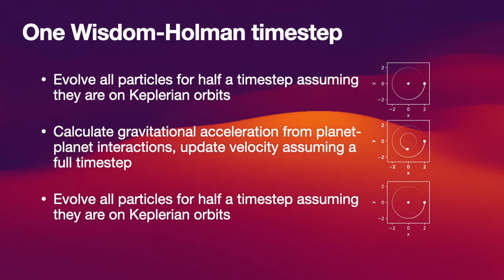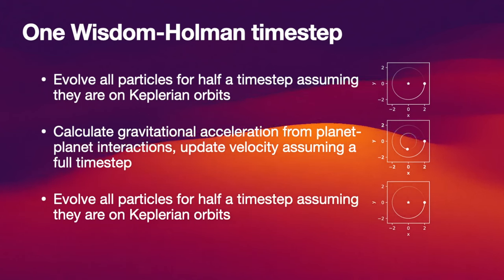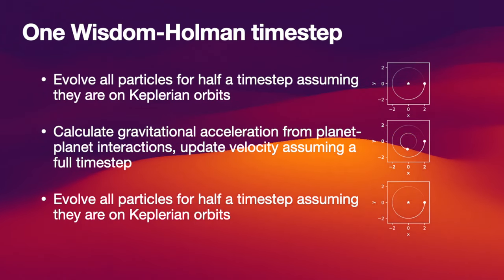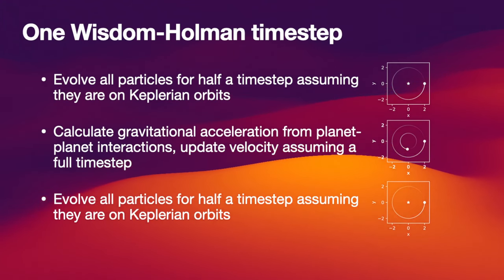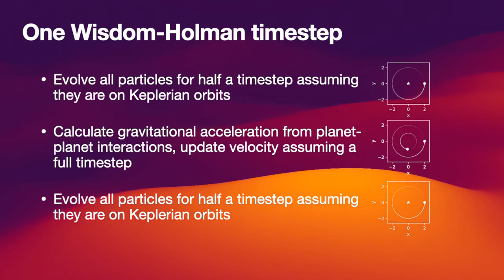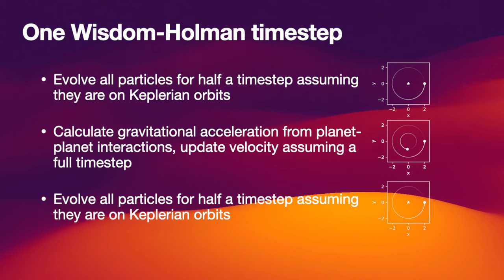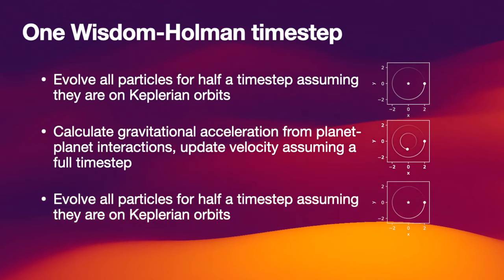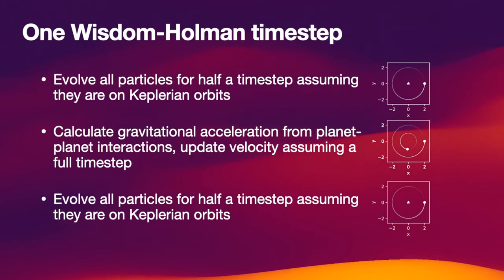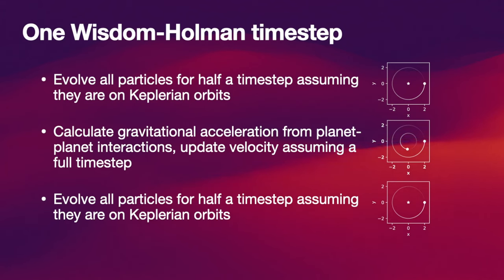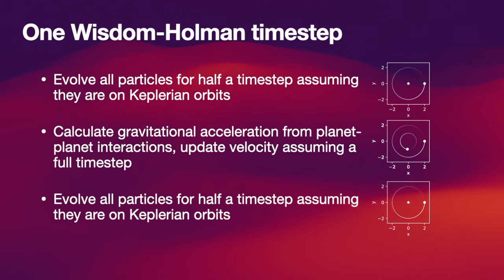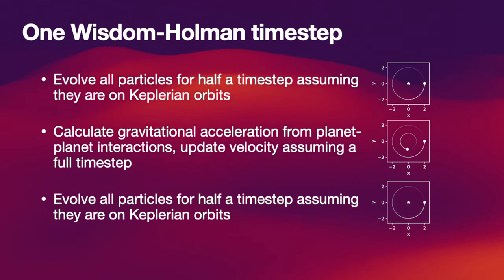To construct one complete Wisdom-Holman time step, it involves three steps. First, we evolve all particles for half a time step, assuming that they are on Keplerian orbits, therefore ignoring all the other planets. We then calculate the gravitational accelerations from planet-planet interactions, and we assume that for a full time step those are applied to the velocities, and therefore the velocities will change. At the end, we finish off with yet another half time step, evolving all particles on Keplerian orbits. This is very reminiscent of a drift-kick-drift splitting that you might be familiar with from a leapfrog scheme.